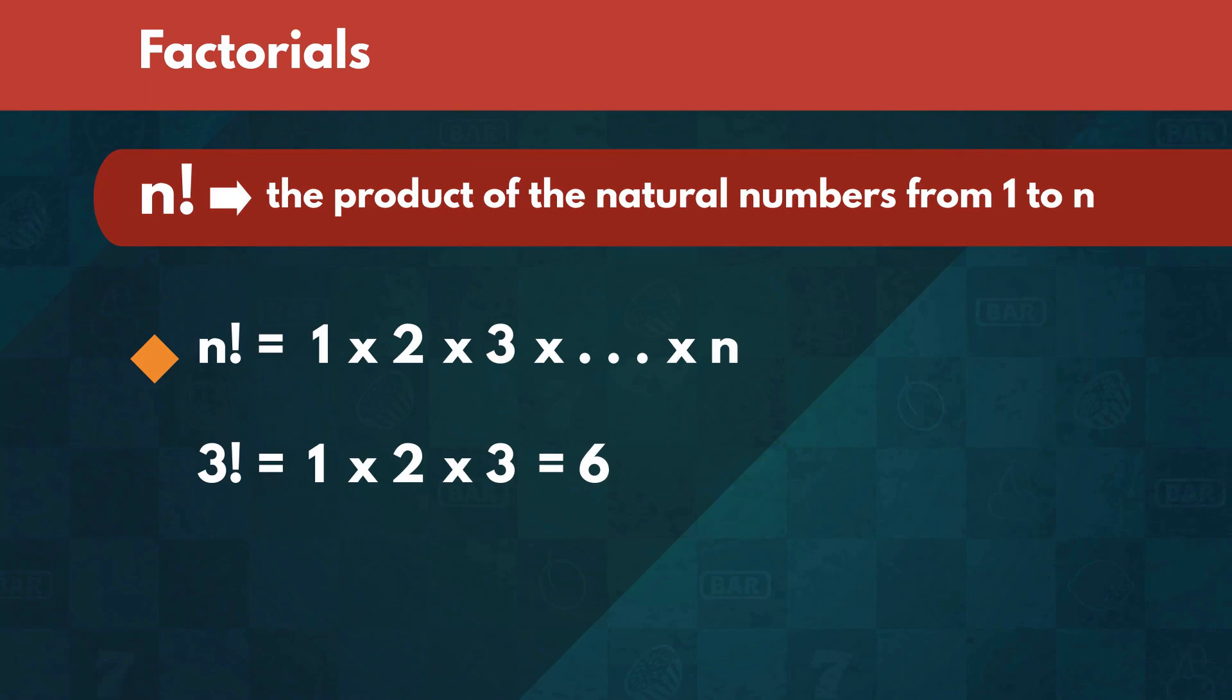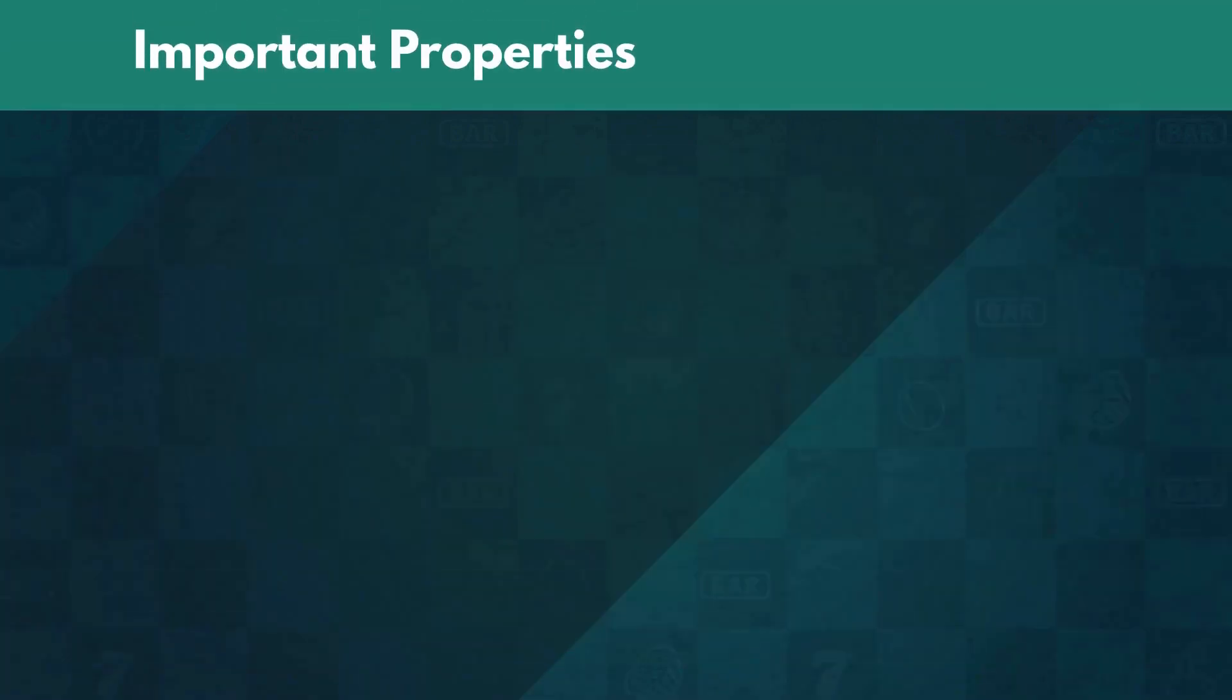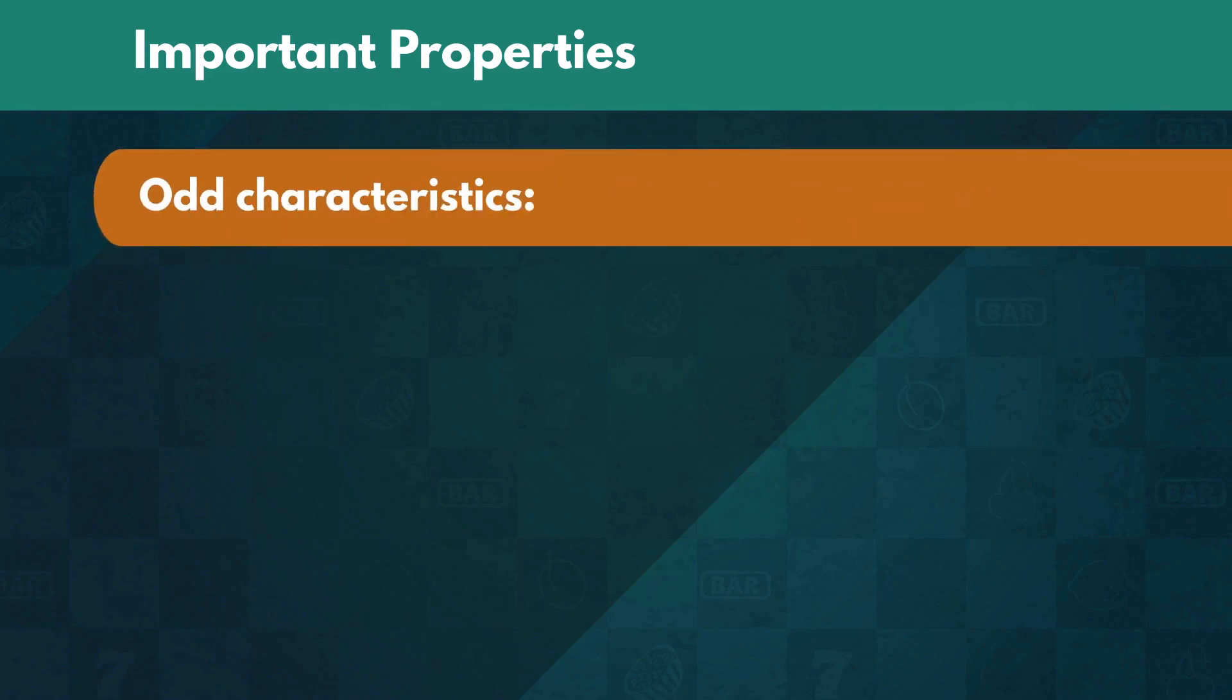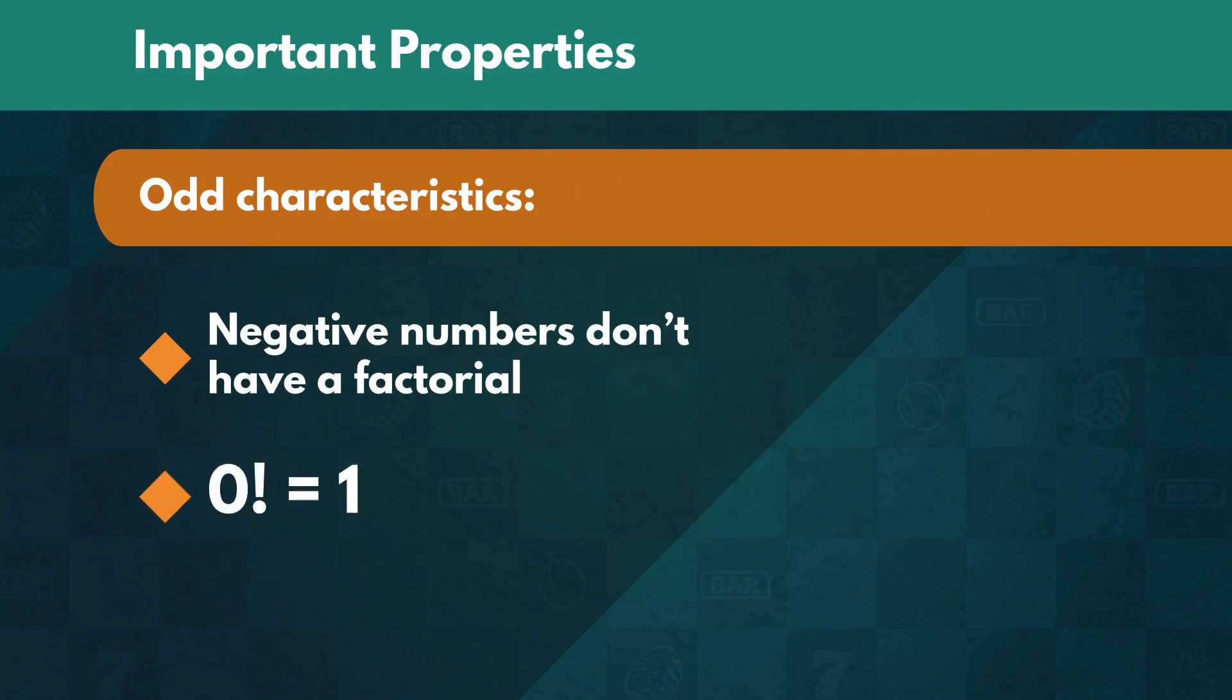For the remainder of the lecture, we are going to explain some important properties of factorial mathematics. Before we get into the more complicated concepts, you should know that there is one odd characteristic. Negative numbers don't have a factorial, and 0 factorial is equal to 1 by definition.